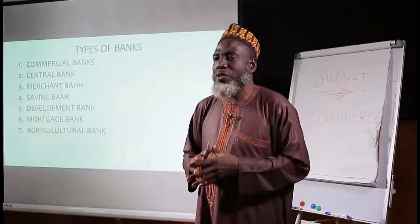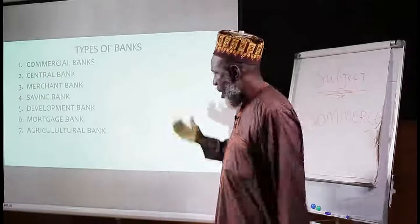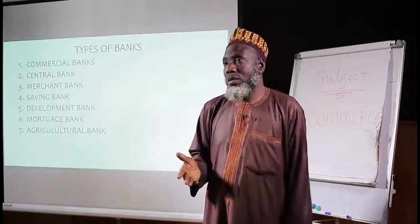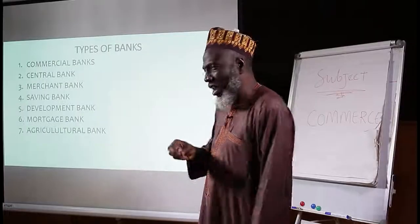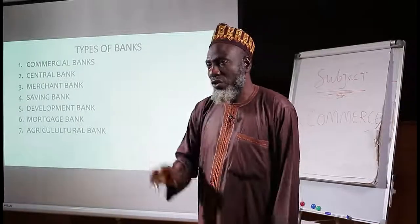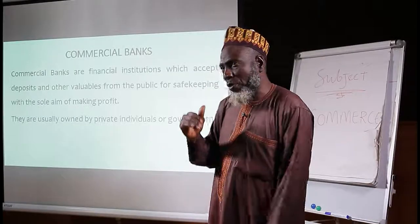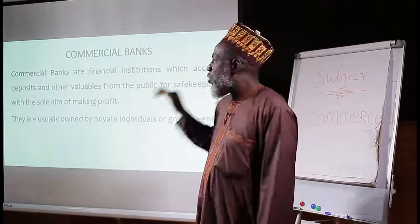Now, talking about the origin of bank — that is how we have the banks we have today. Having talked about the origin of banking, we now move to types of banks. There are several different types of banks. We only have seven here, but there are more than seven, so this list is not exhaustive. Number one, we have commercial banks. Then we have central bank. We have savings bank, development bank, mortgage bank, and agricultural bank.